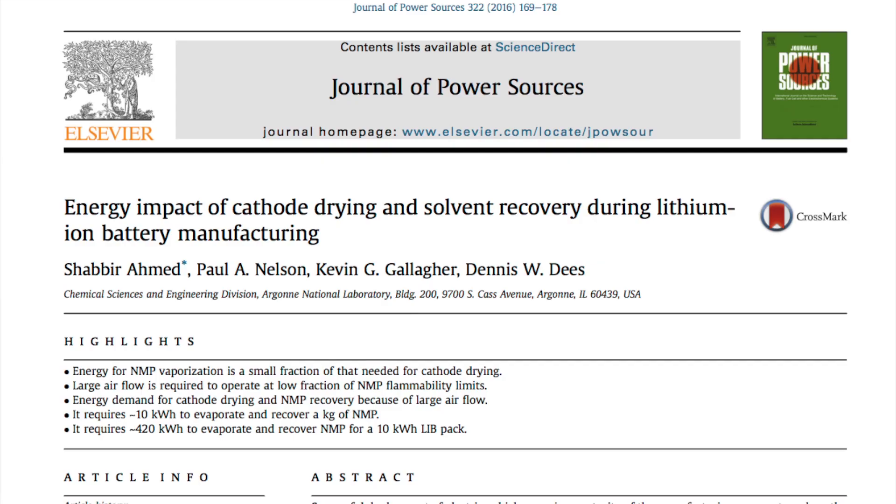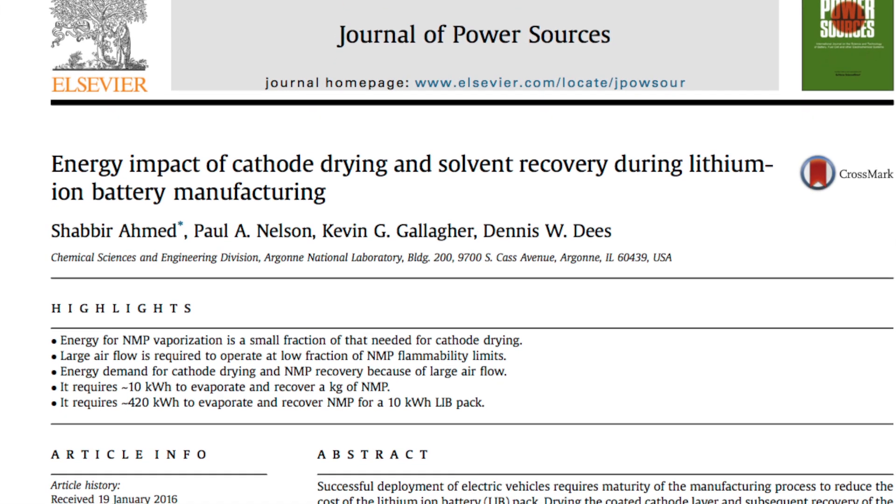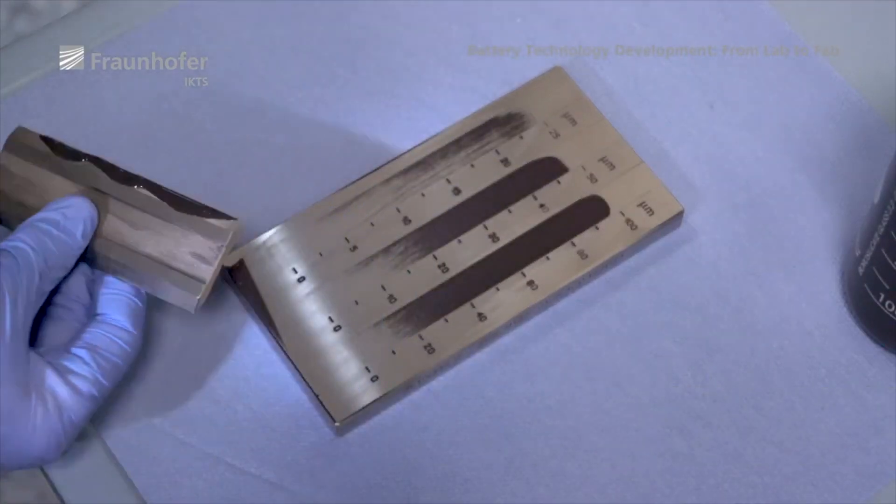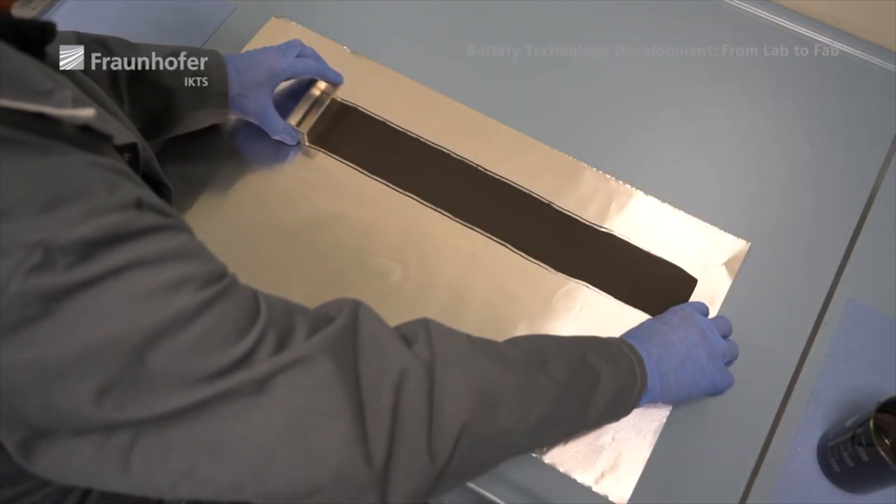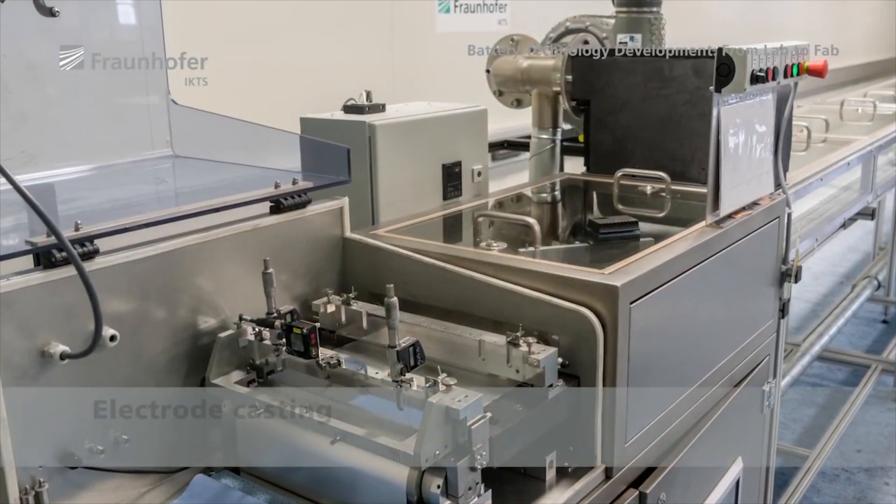In a study by Ahmed et al. at Argonne National Lab listed in the description below, the researchers determined that it takes approximately 42 kWh of energy per kWh of batteries produced to evaporate the solvent used in the wet process.